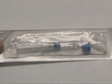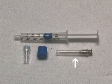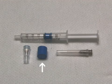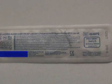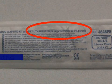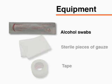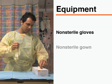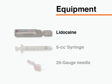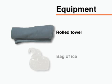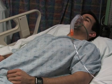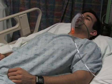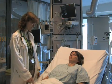Standard arterial blood gas sampling kits are readily available and contain a syringe, a small 23 to 25 gauge needle either with a rubber stopper or an attached safety cap, and a syringe cap containing dry lithium heparin or sodium heparin. You will also need alcohol swabs, sterile gauze, tape, non-sterile gloves and gown, 1% lidocaine without epinephrine for local analgesia, a 5cc syringe with a 25 gauge needle, a small rolled towel for under the wrist, and a bag of ice to transport the sample. When possible, the procedure should be explained to the patient and consent obtained.